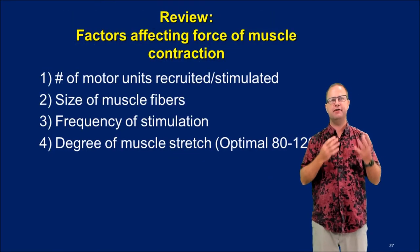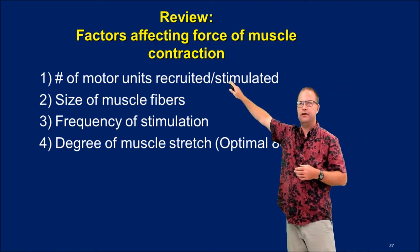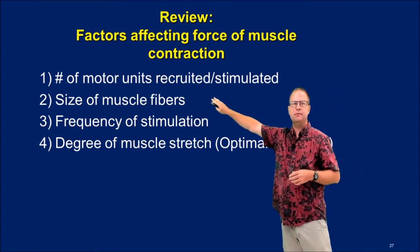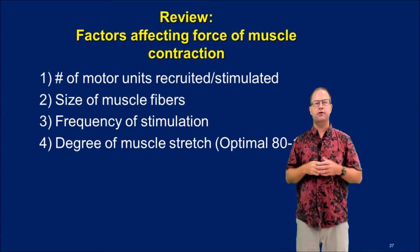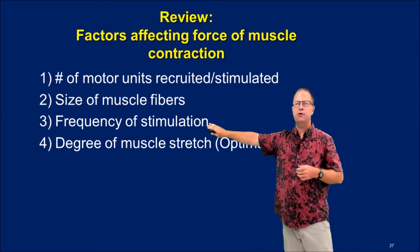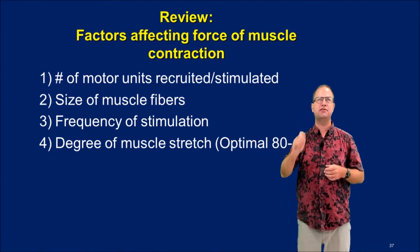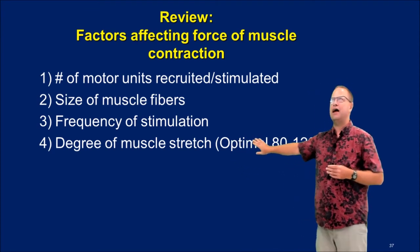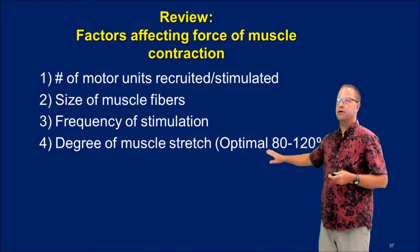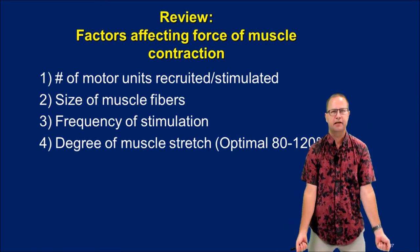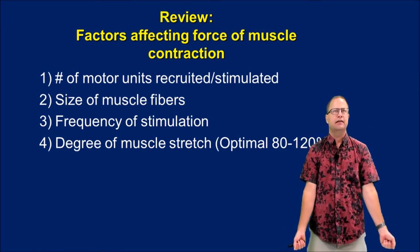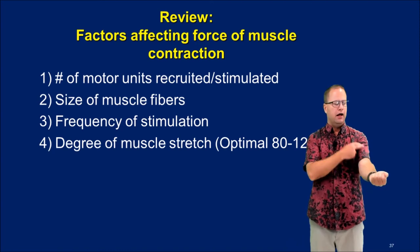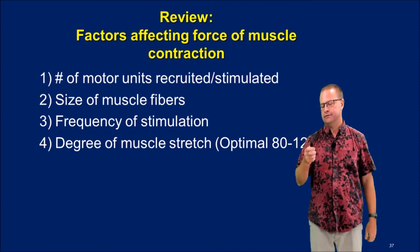Several factors affect the strength and length of muscle contraction. One is the number of motor units stimulated — for small contractions we don't need all motor units. Another is the size of the muscle fibers — large diameter fibers are stronger than small diameter fibers. The frequency of stimulation also matters — wave summation through repeated stimulation produces a stronger and longer contraction. Finally, the degree of muscle stretch affects contraction strength: depending on how stretched the muscle or joint is, we can get a stronger or weaker contraction — which is why weightlifters position their arms at an ideal angle for efficient lifting.